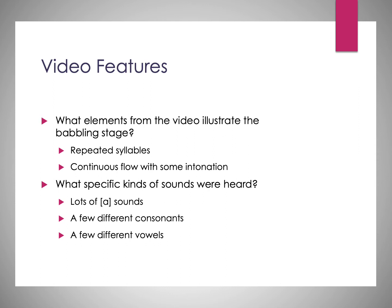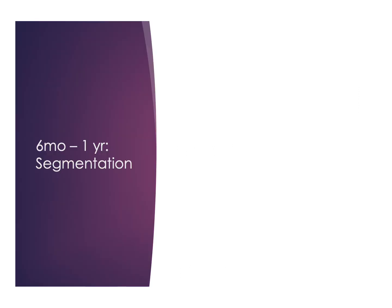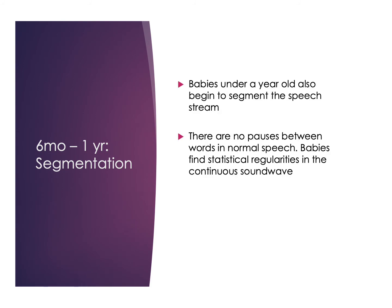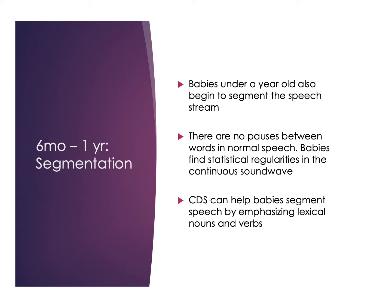Around the same time babbling takes off, babies start being able to segment the speech stream they're hearing. When adults speak, we don't pause between words in normal speech, yet we're still able to hear where words end and begin. Babies will start doing this by around a year old, finding statistical regularities in the continuous sound wave. Child-directed speech helps with this — we tend to emphasize lexical nouns and verbs, downplay grammatical words, pause between words, speak slower, and repeat things, helping babies parse and find those patterns better.